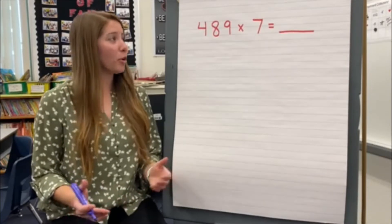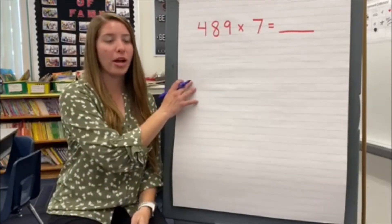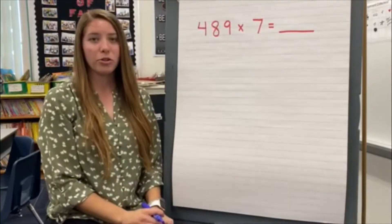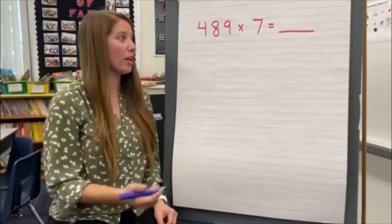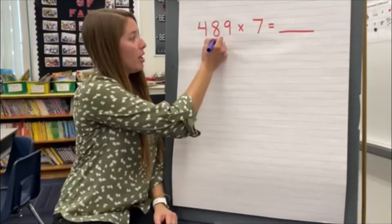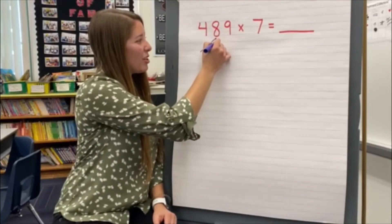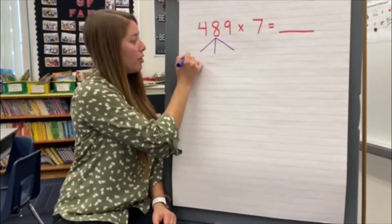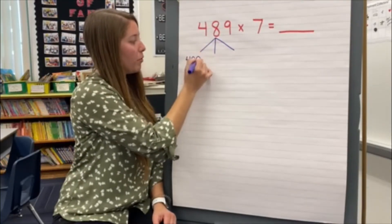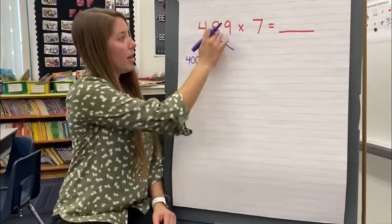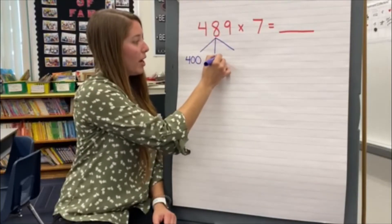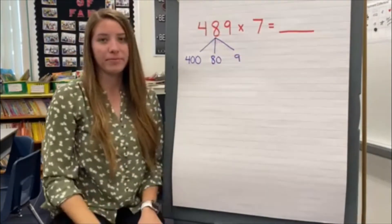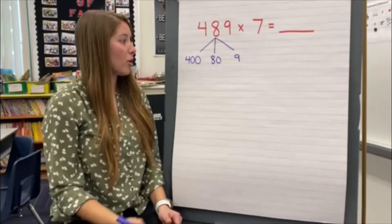This strategy works exactly the same if you're multiplying a three-digit number by a one-digit number. The first thing we're going to do is decompose that larger number into its components using expanded notation. So 4 hundreds is worth 400, 8 tens has a value of 80, and 9 ones has a value of 9.